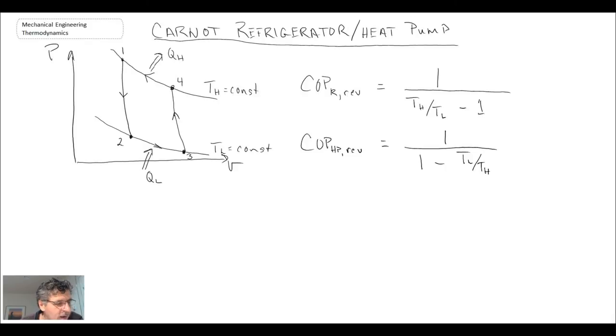These are the coefficients of performance that we would examine as idealizations for any real process. In reality, if we're looking at a refrigeration cycle with irreversibilities in it, which all refrigeration cycles would have,